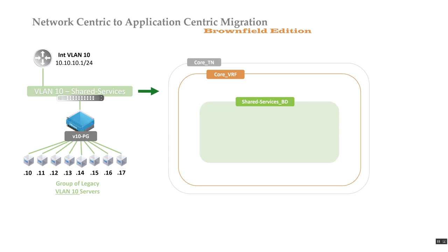In ACI, VLANs are not used the same way as in traditional networks. In traditional networks, VLANs are used for segmentation and isolation — endpoints on a VLAN are designed for specific subnets, and you want to contain everything within a VLAN for broadcast saturation reasons.